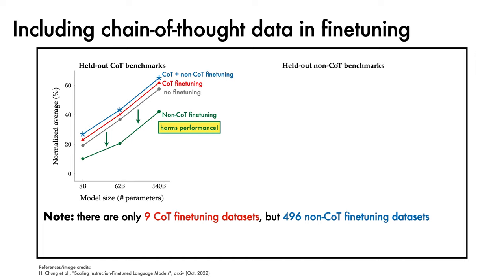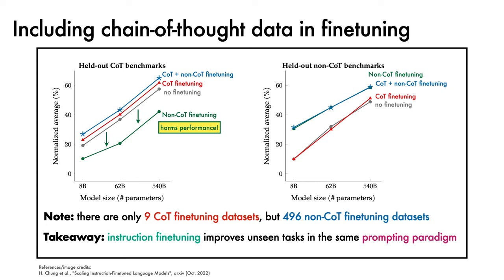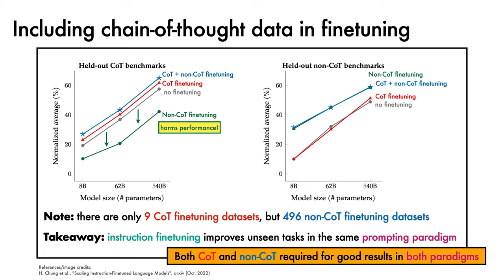We can make an equivalent plot for held-out non-chain-of-thought benchmarks. This time, we find that chain-of-thought fine-tuning and no fine-tuning perform similarly. We also find that fine-tuning on non-chain-of-thought data and a combination of chain-of-thought and non-chain-of-thought data perform similarly. A reasonable takeaway is that instruction fine-tuning improves unseen task performance for tasks that have the same prompting paradigm as the fine-tuning instructions. Consequently, both chain-of-thought and non-chain-of-thought data is required to produce good results under both prompting paradigms.